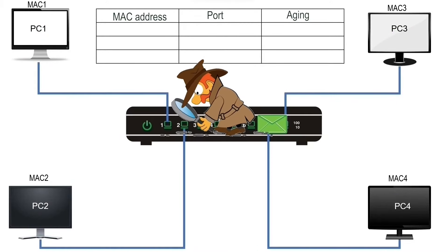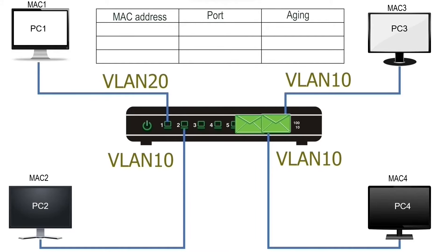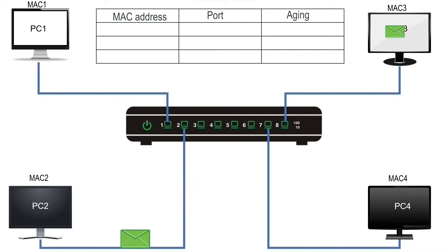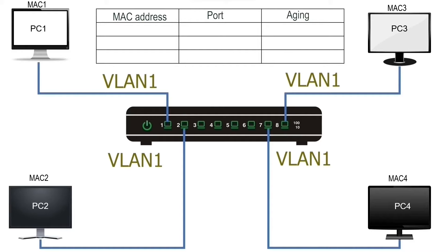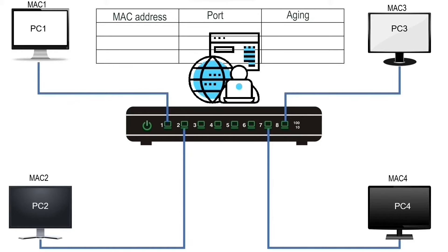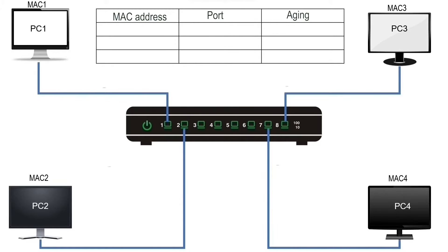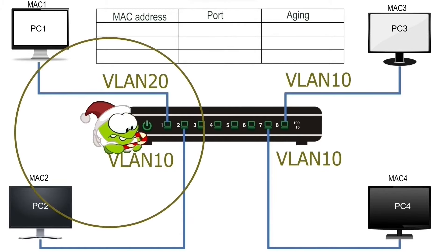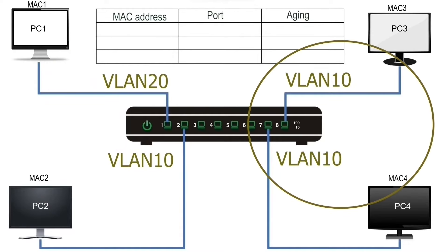After making a forwarding decision, the switch finds ports having the same VLAN configuration as the incoming port and forwards the frame only from those ports. By default, all switch ports belong to VLAN 1, which is the default VLAN on all Cisco switches. We can create custom VLANs in global configuration mode and apply them to switch ports. If two switch ports belong to different VLANs, they do not share broadcast messages; if they belong to the same VLAN, they do.